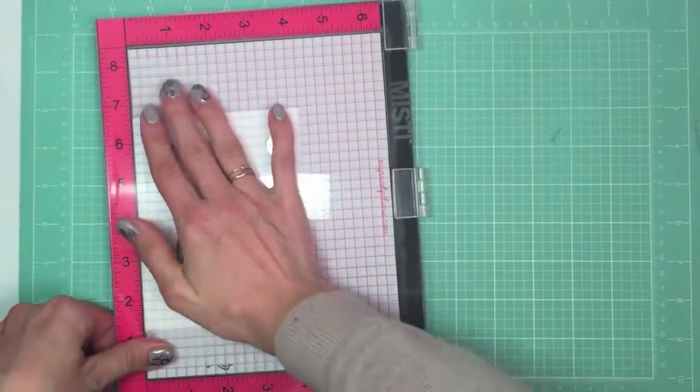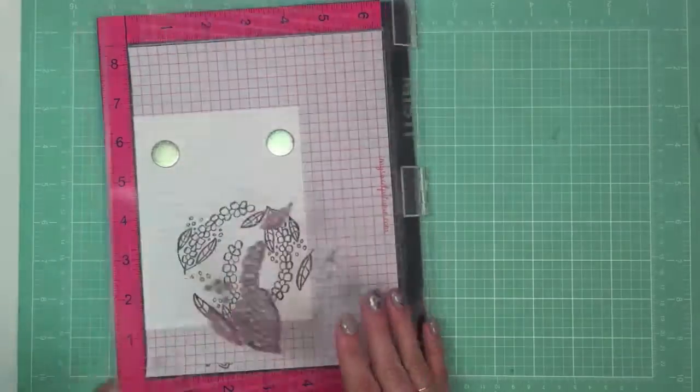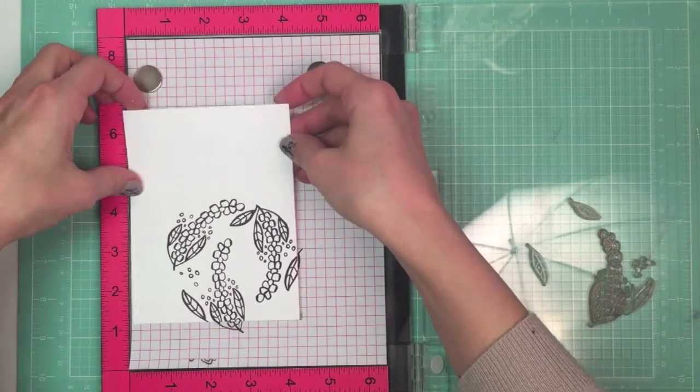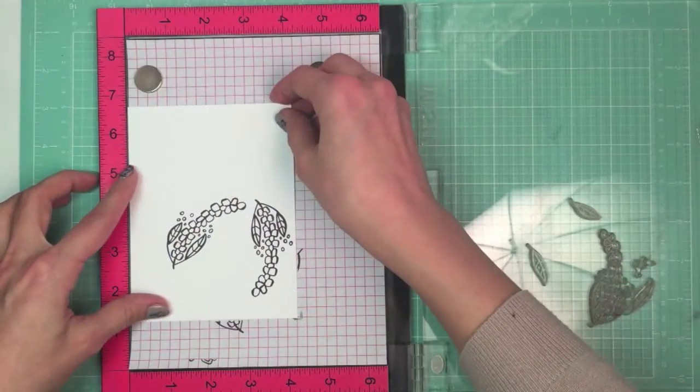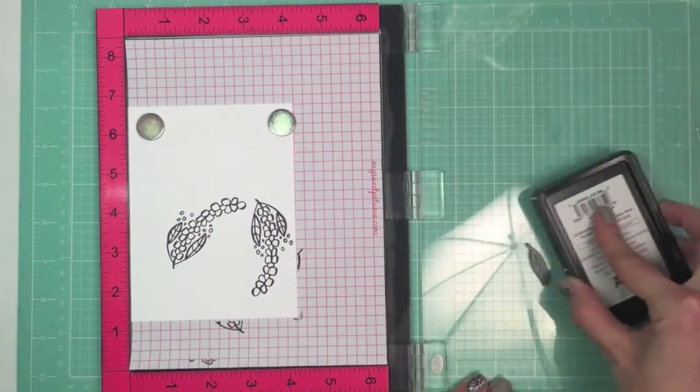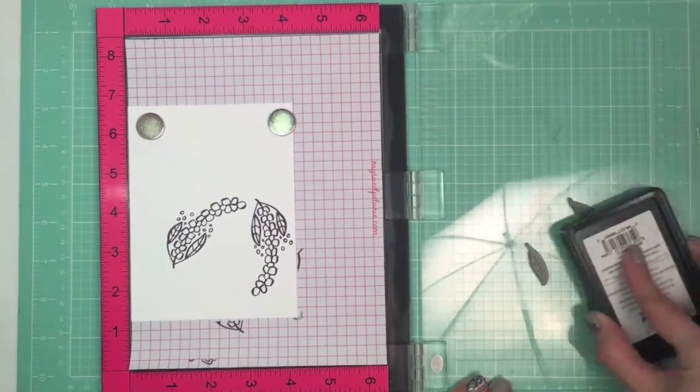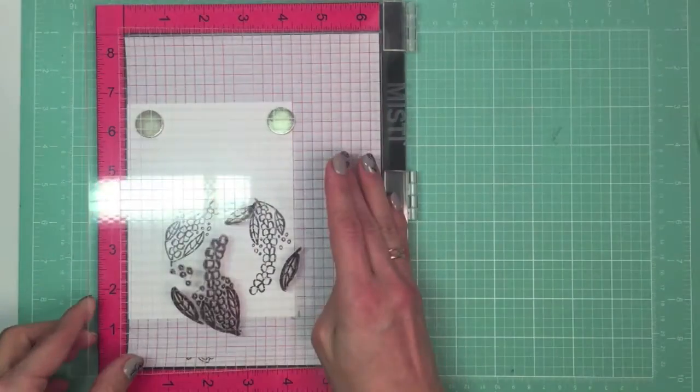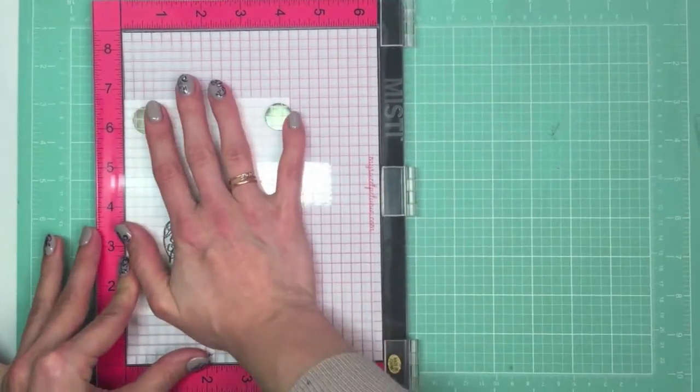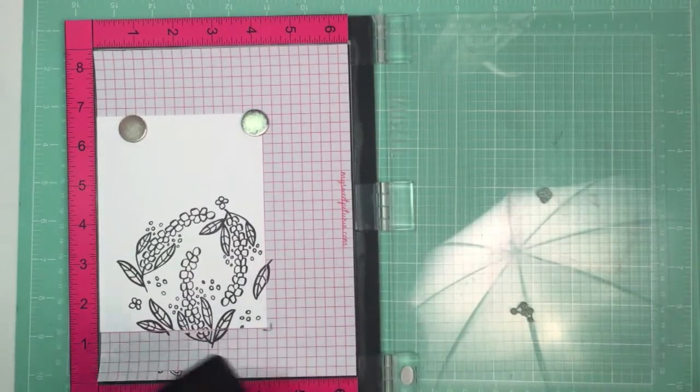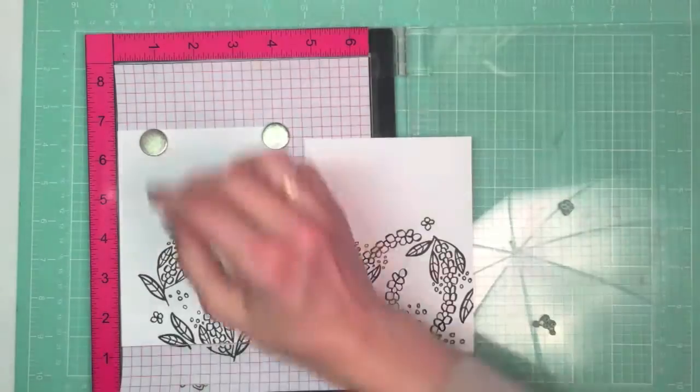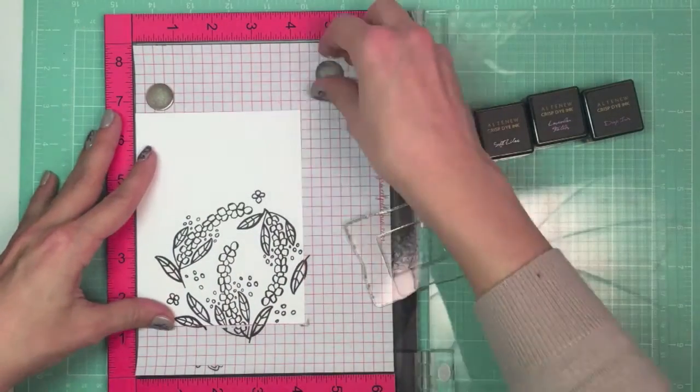Another bonus is that you can restamp your image so easily. If you found out that you want more vibrance in color, or your image didn't stamp perfectly—although with MISTI it's hardly ever happened—you can do it really easily. Just ink your stamp once again and you got a perfect image, perfect sentiment, or perfect pattern like we have here. Now when we have two identical panels, I'm going to use one of those to stamp my second image.